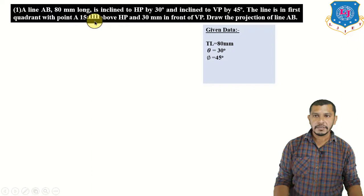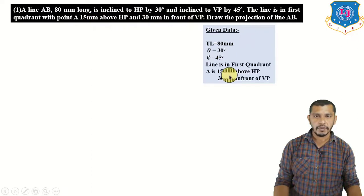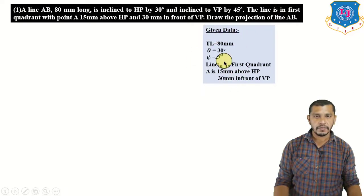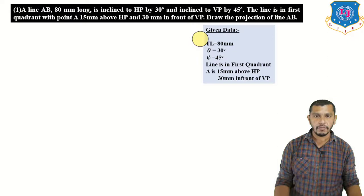Point A is 15 mm above HP and 30 mm in front of VP, and the line is in the first quadrant. We have to draw the projection of the line using the given information regarding the true length. We will draw the true length first, then find the plan and elevation by following the procedure discussed in the last lecture.